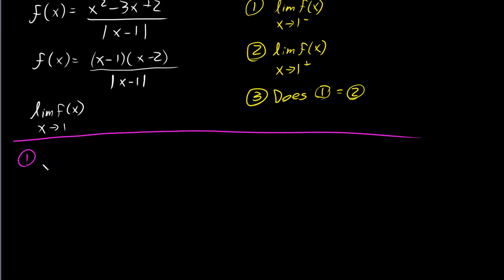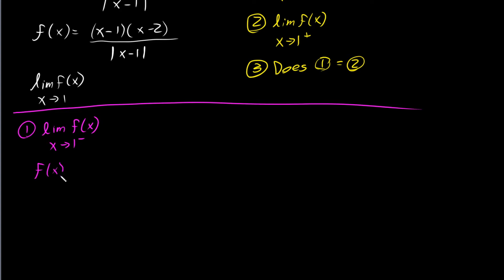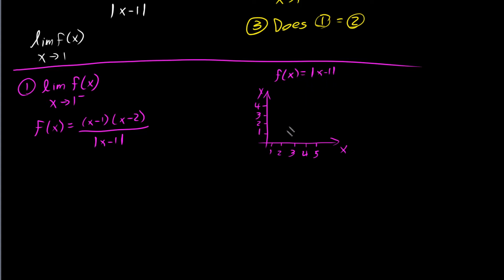Let's solve for the limit as x approaches 1 from the left. Our function is (x−1)(x−2) / |x−1|. Let's take a look at this absolute value of x minus 1 and see what we can do with it. If we graph f(x) = |x−1|: at x=1 we get 0; at x=2 we get 1; at x=3 we get 2; at x=4 we get 3; at x=5 we get 4.